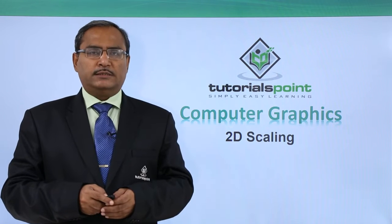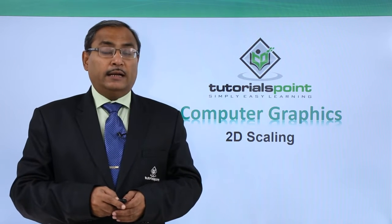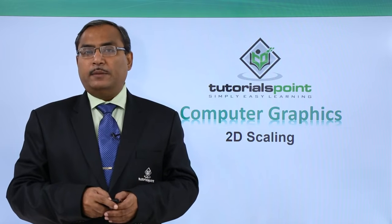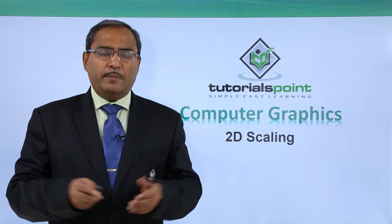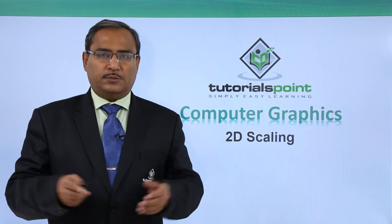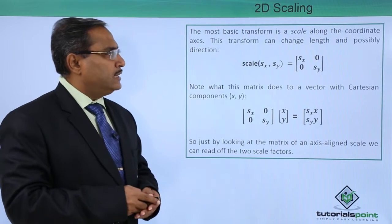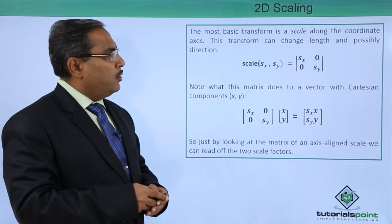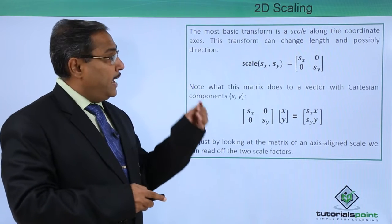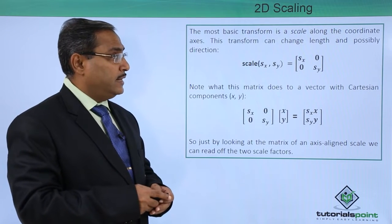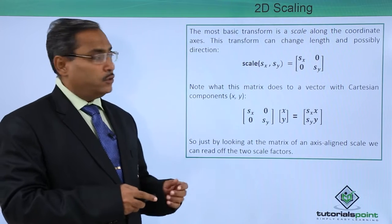In this session, we are going to discuss 2D scaling and how this 2D scaling can be done in our two-dimensional environment and in case of 2D transformation. The most basic transform is a scale along the coordinate axis and this transform can change the length and possibly the direction also.